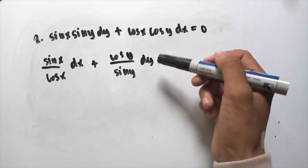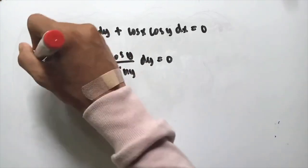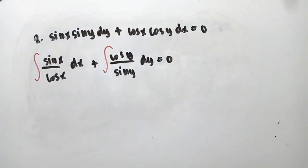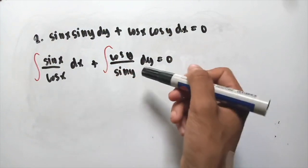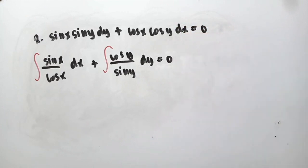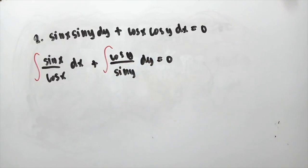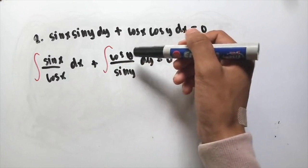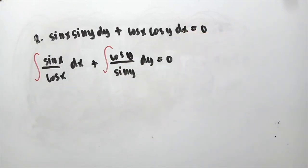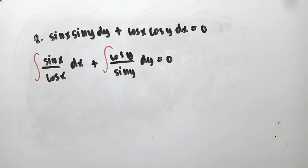Integrating both sides: the integral of sin x over cos x dx is the integral of tan x dx, and the integral of cos y over sin y dy is the integral of cot y dy, since by ratio identities sin x over cos x equals tan x.